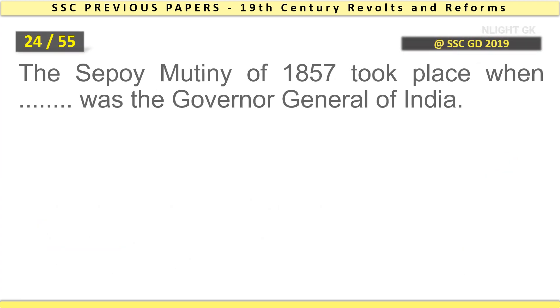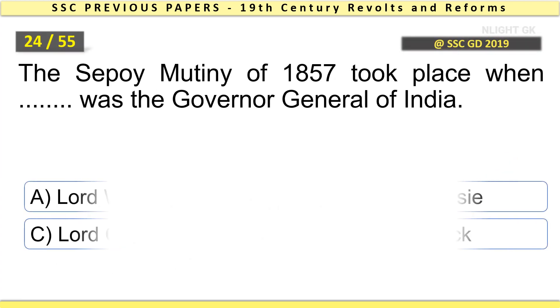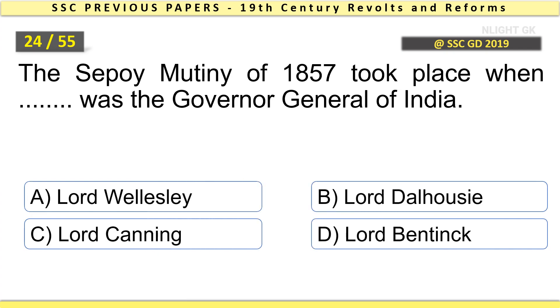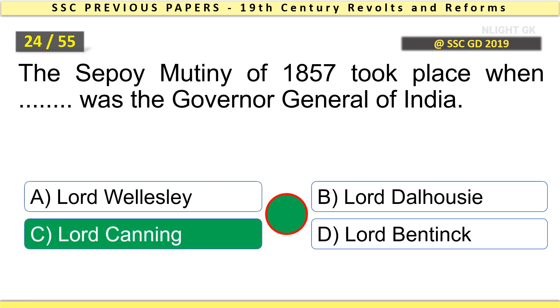The Sepoy Mutiny of 1857 took place when who was the Governor-General of India? Lord Canning.